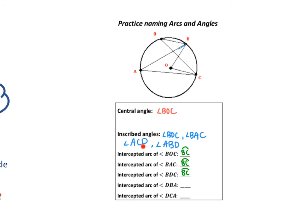Looking at angle DBA, the endpoints are A and D, so the arc would be AD. For angle DCA, again we have endpoints A and D, which means the arc is AD. The intercepted arc of your angles consists of your endpoints — you can always tell the intercepted arc based on the endpoints of your angle. BOC gives arc BC, BAC gives arc BC, and so on.